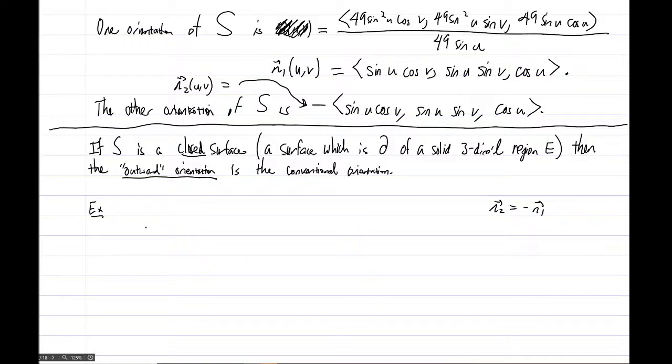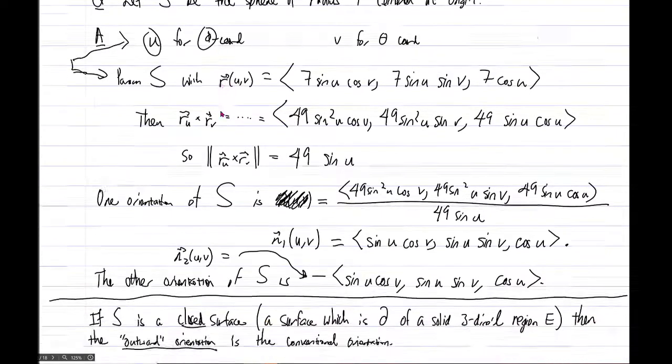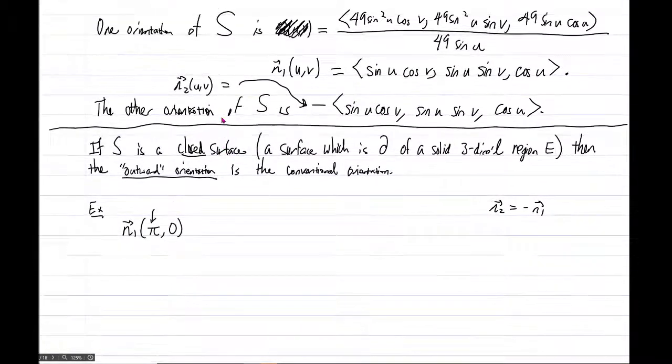Now what we'll do is let's go ahead and compute n sub 1 of pi comma 0. So if the u coordinate is pi, if we go back and recall the u coordinate was the phi value, and the phi value is the angle off the positive z-axis. So if the phi coordinate is really pi, then we're actually talking about here the south pole. Now we can go ahead and compute, plug in pi and 0 in for u and for v everywhere you have this here, and what you'll end up with is you'll get the vector (0, 0, -1).